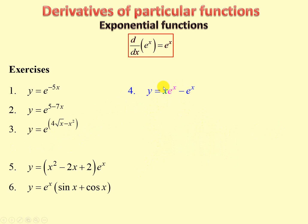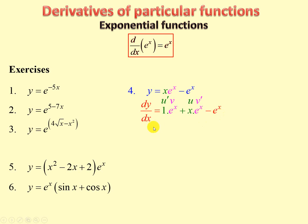Exercise 4 has a product and then a separate function. We use the product rule on the first term, and the derivative of e to the x is e to the x. Setting u and v, there's u prime times v, plus u times v prime, minus e to the x. The e to the x terms cancel one another out, so we end up with x e to the x.